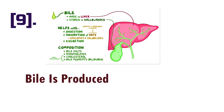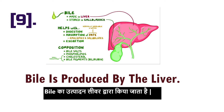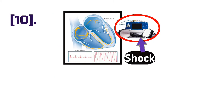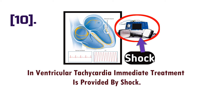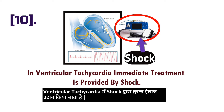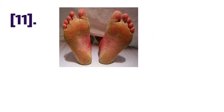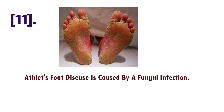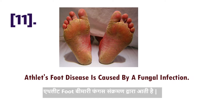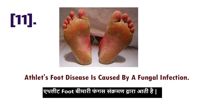Point number nine: bile is produced by the liver. Point number ten: in ventricular tachycardia, immediate treatment is provided by shock.